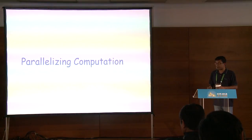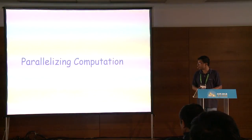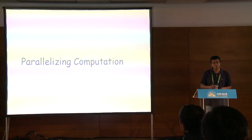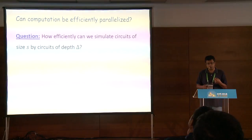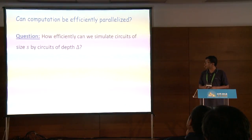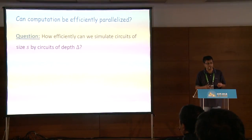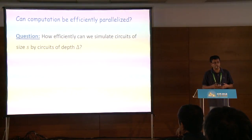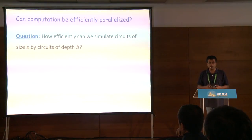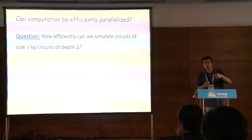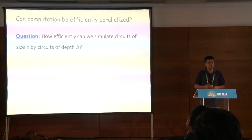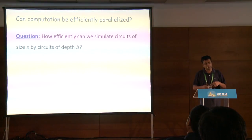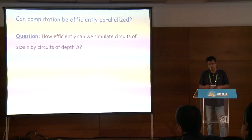Let me step back and discuss another thread of research on parallelizing computation. The question is: can we efficiently parallelize computation? Suppose I have a computation that can be done in S steps, but I want a circuit of depth delta that does the same computation. You can always do this — with depth 2 you can write a polynomial as a sum of monomials. But the question is: what is the price we must pay in terms of the size of this new circuit?